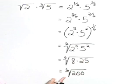Now that's a simpler form. So the simplest form of the square root of 2 times the cube root of 5 is the sixth root of 200.